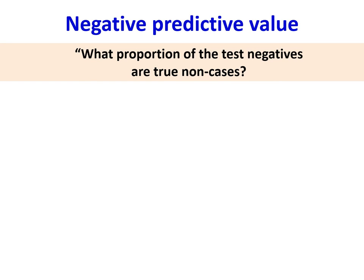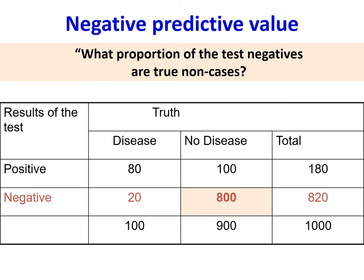Negative predictive value: what proportion of the test negatives are true non-cases? We focus on the second row — only those found negative by our test of interest, which is 820. Of them, 800 are actually negative determined by the gold standard. So the negative predictive value is 800 divided by 820.